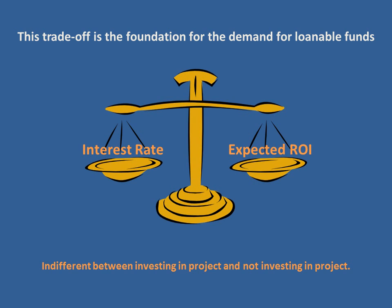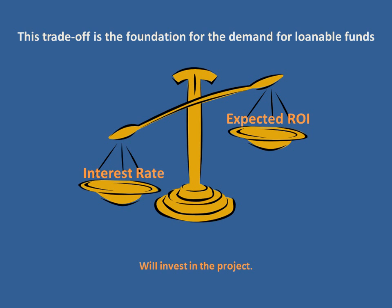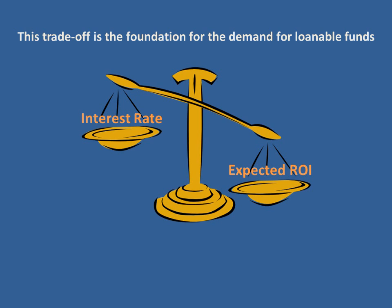There's a possibility that the expected return on investment is higher than the interest rate they have to pay — this is where the decision says yes, the firm is going to invest in this project. There's also the case where the interest rate could be higher than the expected return on investment, and this is when the firm will not invest in the project because they're going to be losing money.